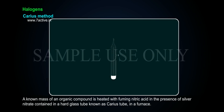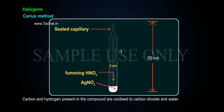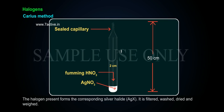Halogens Carriers Method. A known mass of an organic compound is heated with fuming nitric acid in the presence of silver nitrate, contained in a hard glass tube known as a Carriers tube, in a furnace. Carbon and hydrogen present in the compound are oxidized to carbon dioxide and water. The halogen present forms the corresponding silver halide, AgX.